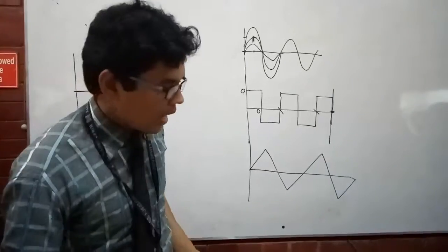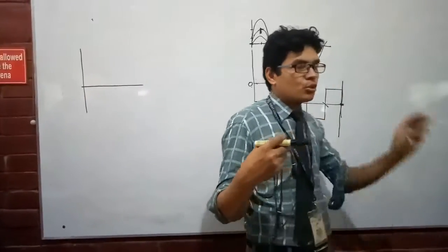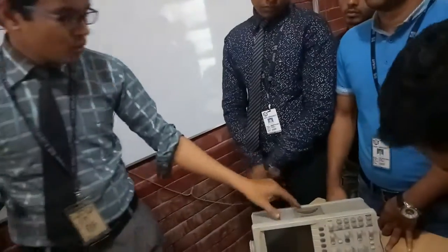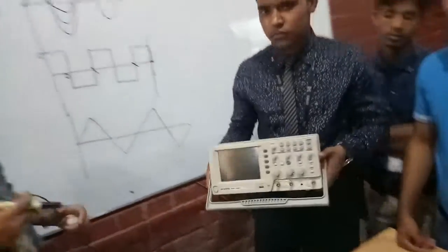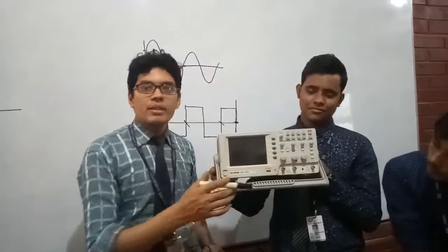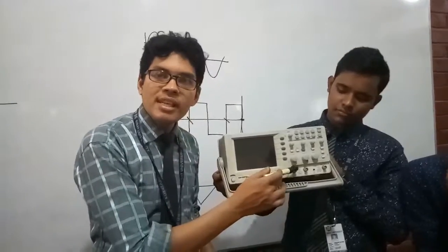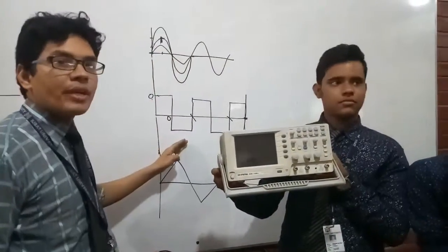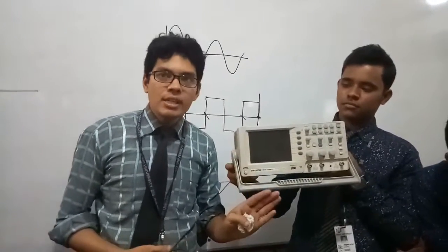Next, how do you connect the oscilloscope? The oscilloscope has got a probe. This is the terminal where we are feeding the signal to the oscilloscope. Different signals can be observed — we feed the signal here through the oscilloscope.